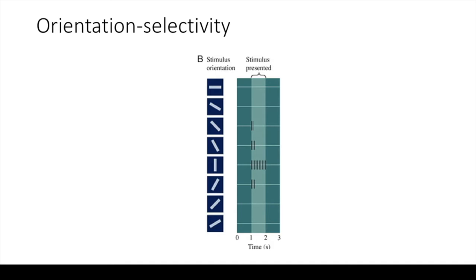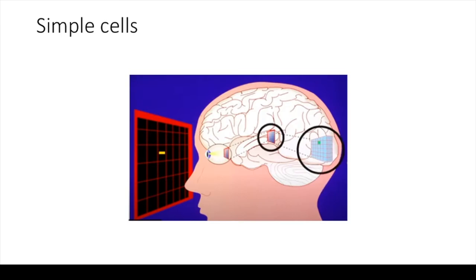You can see here the response of a cell to bars of different orientations. You can appreciate that this cell is at its most active in the presence of a vertical line, and it starts to get less and less active as you approach the horizontal. So, within its receptive field, a cell prefers a certain orientation. It is very specific.